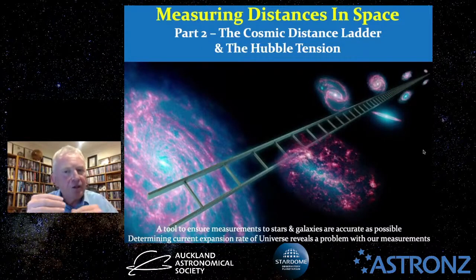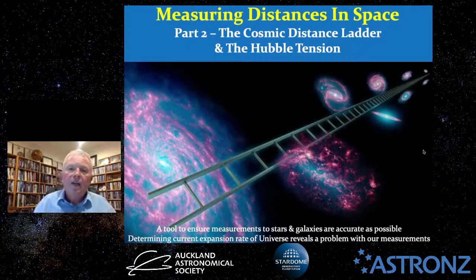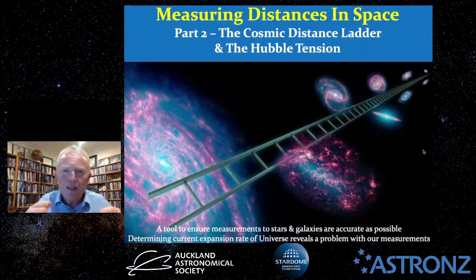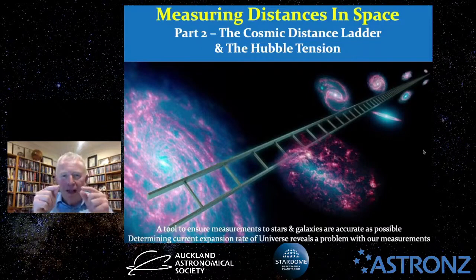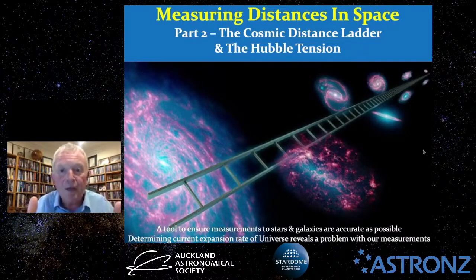Tonight you'll learn all about the Cosmic Distance Ladder — the tool astronomers use to measure distances to stars and galaxies as accurately and precisely as possible. We're also going to talk about the Hubble Tension and how astronomers try to measure the current expansion rate of the universe in two ways: by measuring distances to galaxies in the local universe, and by taking measurements of how the universe appeared in its early years. Importantly, that will reveal a serious problem with astronomers' ability to measure distances through space.